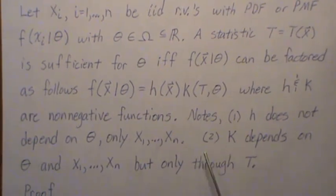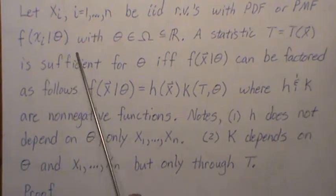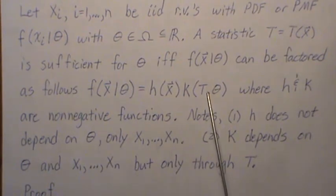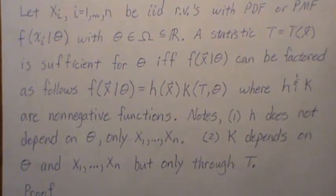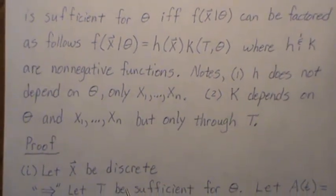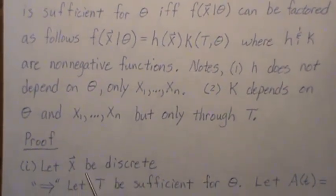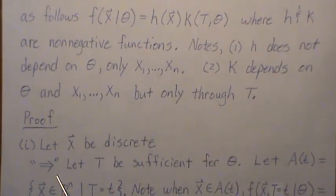This is an if-and-only-if proof, so we have to assume the factorization and prove sufficiency, and also assume sufficiency and prove factorization. First, let's do it for the discrete case. So let x be discrete, and let's prove it left to right first.